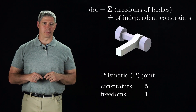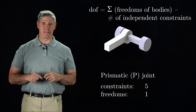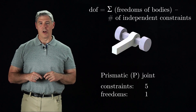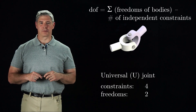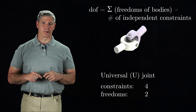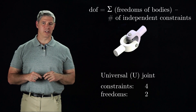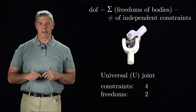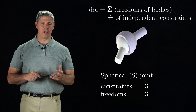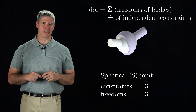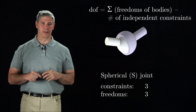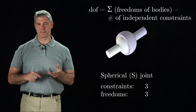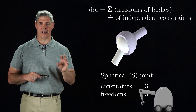Another common joint with one degree of freedom is the prismatic joint, also called a linear joint. We can also have joints with more than one degree of freedom, like the universal joint, which has two degrees of freedom. The spherical joint, also called a ball-and-socket joint, has three degrees of freedom: the two degrees of freedom of the universal joint, plus spinning about the axis.